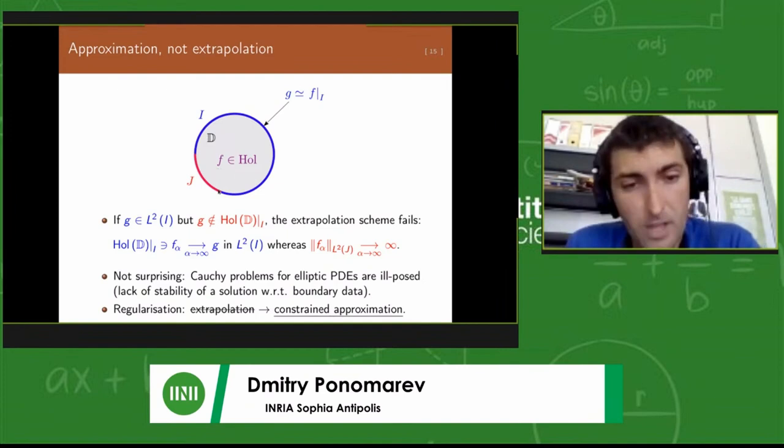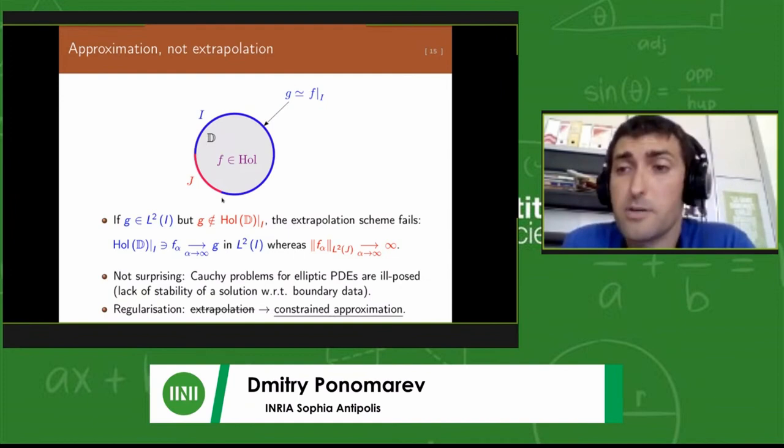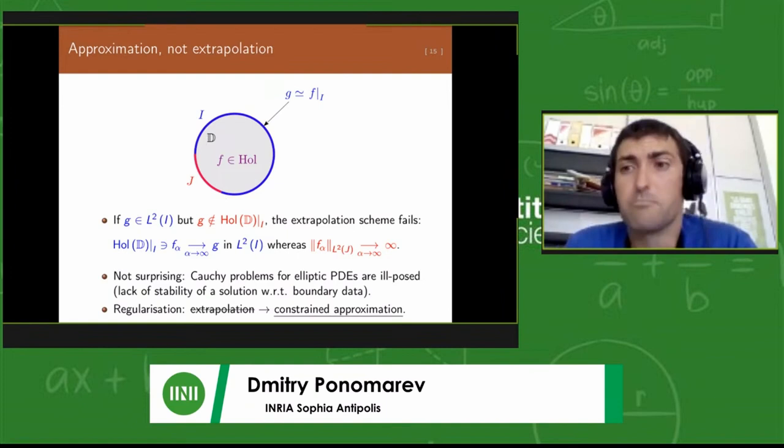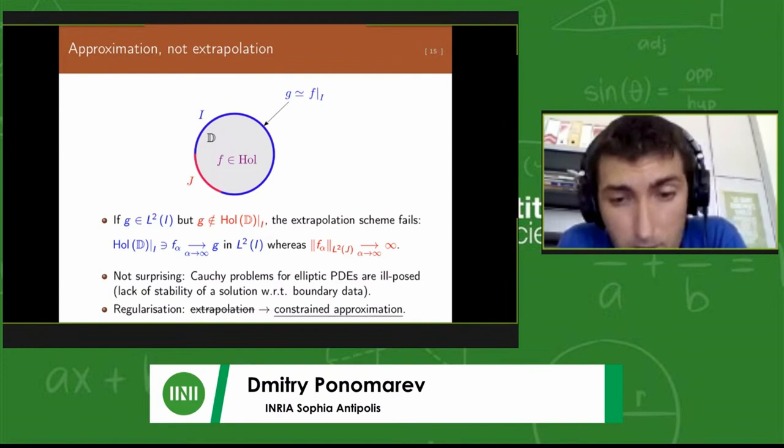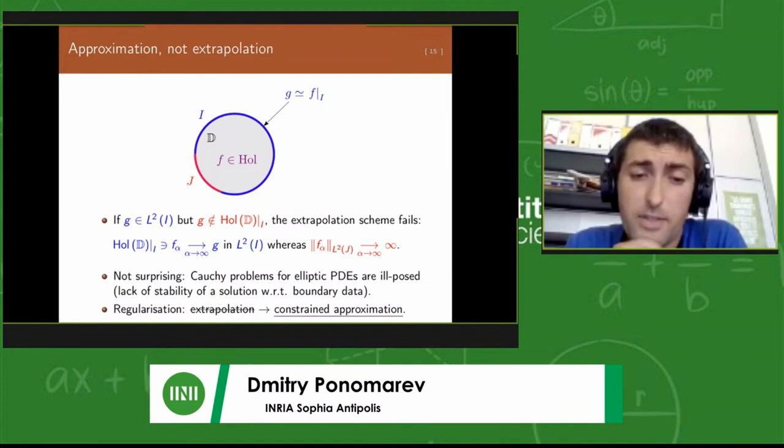When we don't have exact knowledge of the analytic function, but we have boundary values which are only L2. That might be arbitrarily close to the real trace of the analytic function, but not exactly equal to it. Then the above extrapolation with this Carleman extrapolant would necessarily fail.